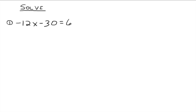Remember the goal is to isolate the variable x. We've got the addition property of equality and the multiplication property of equality — those were the two properties in the previous video that we're going to apply here. We're kind of doing a reverse of the order of operations. The goal is to get every term that has a variable on one side of the equal sign and every term that does not have the variable to the other side, using the addition property of equality.